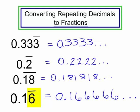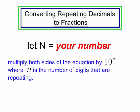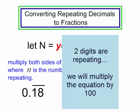How do I take these repeating decimals and change them to fractions? You will begin by letting n equal your number. Then multiply both sides of this equation by 10 to the nth power, where n is the number of digits that are repeating. For 0.18 with a bar over two digits, my n is 2, so I multiply both sides by 10 squared, which is 100.